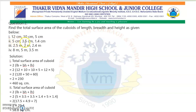Same way, find total surface area of the cuboid when length = 5 cm, breadth = 3.5 cm, height = 1.4 cm. Using 2(LB + BH + HL): = 2(5×3.5 + 3.5×1.4 + 5×1.4) = 2(17.5 + 4.9 + 7) = 2 × 29.4 = 58.8 cm².